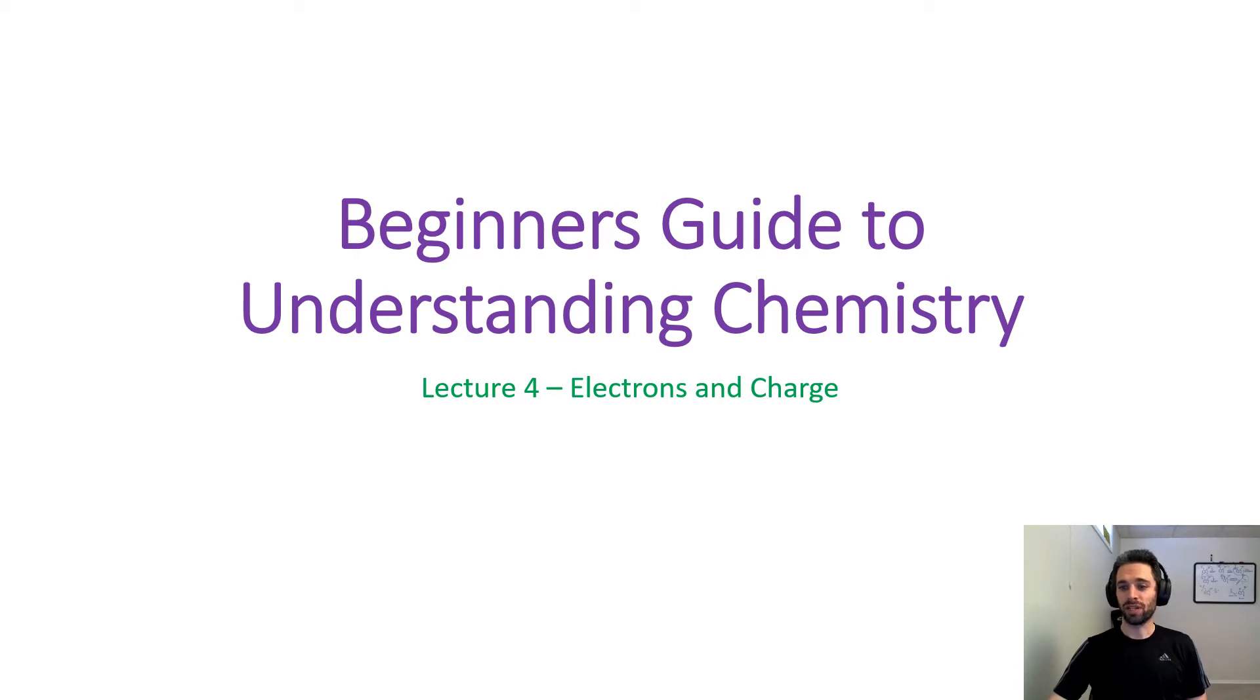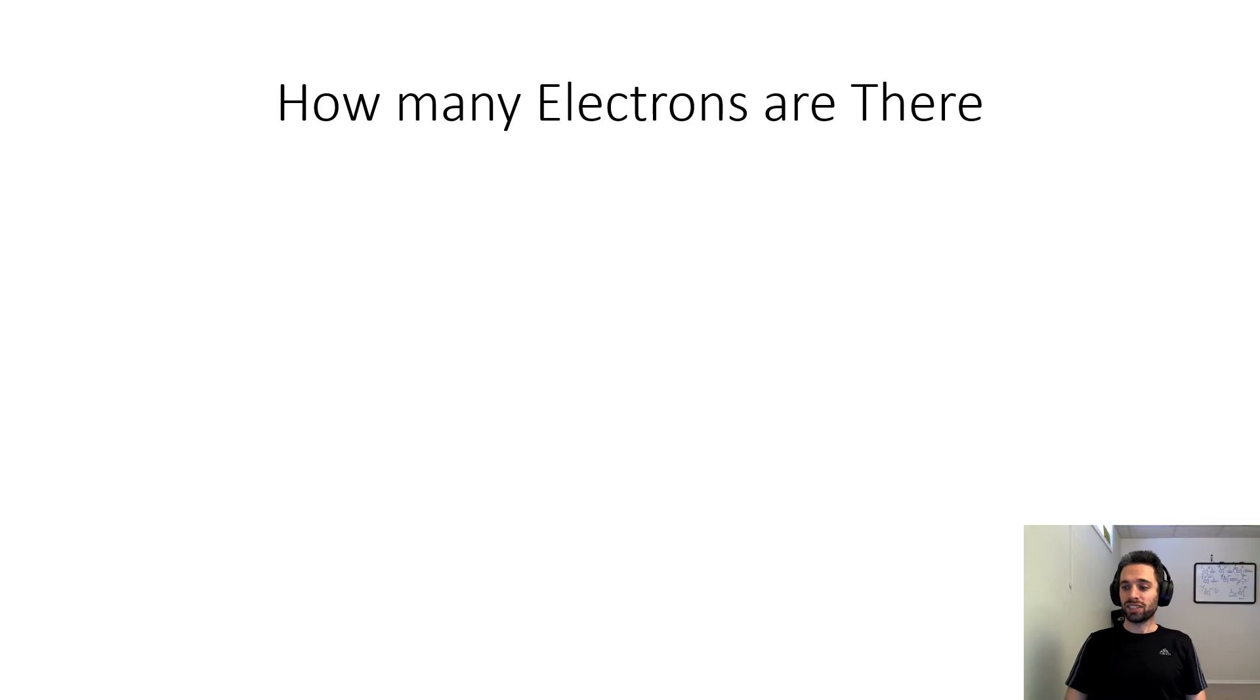Welcome to lecture four of Beginner's Guide to Understanding Chemistry. This lecture will be on electrons and charge. Oftentimes in general chemistry we want to understand how we can determine how many electrons a specific atom has, because after all electrons are going to be one of the most important things we study in this course.